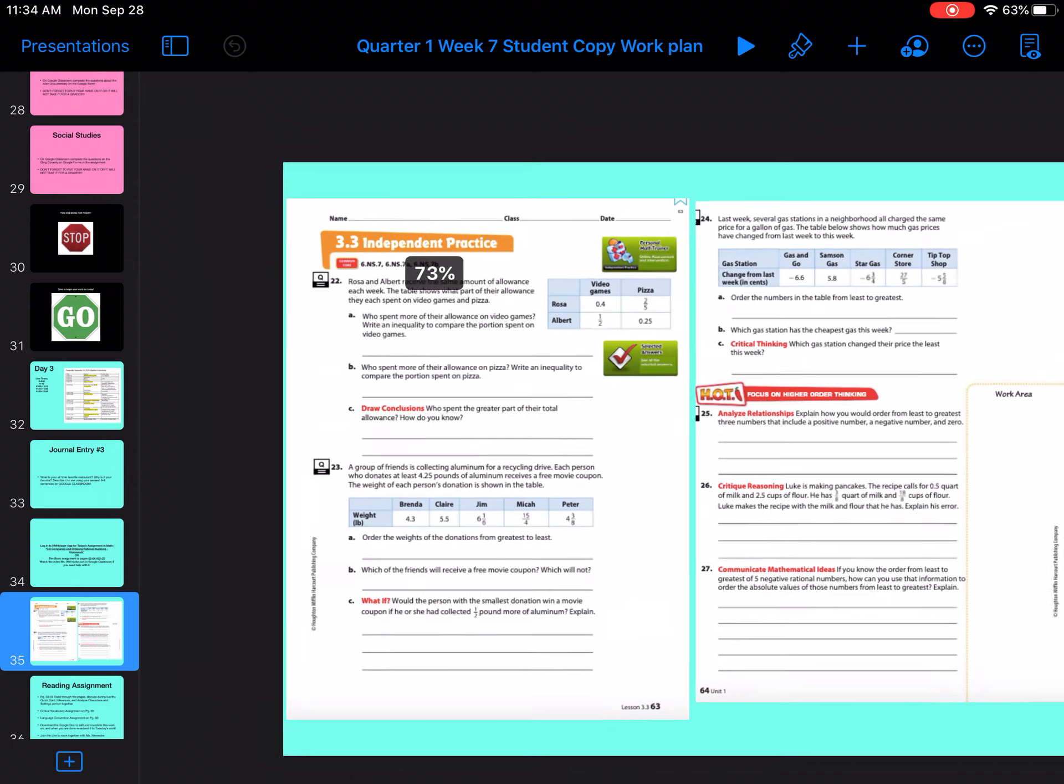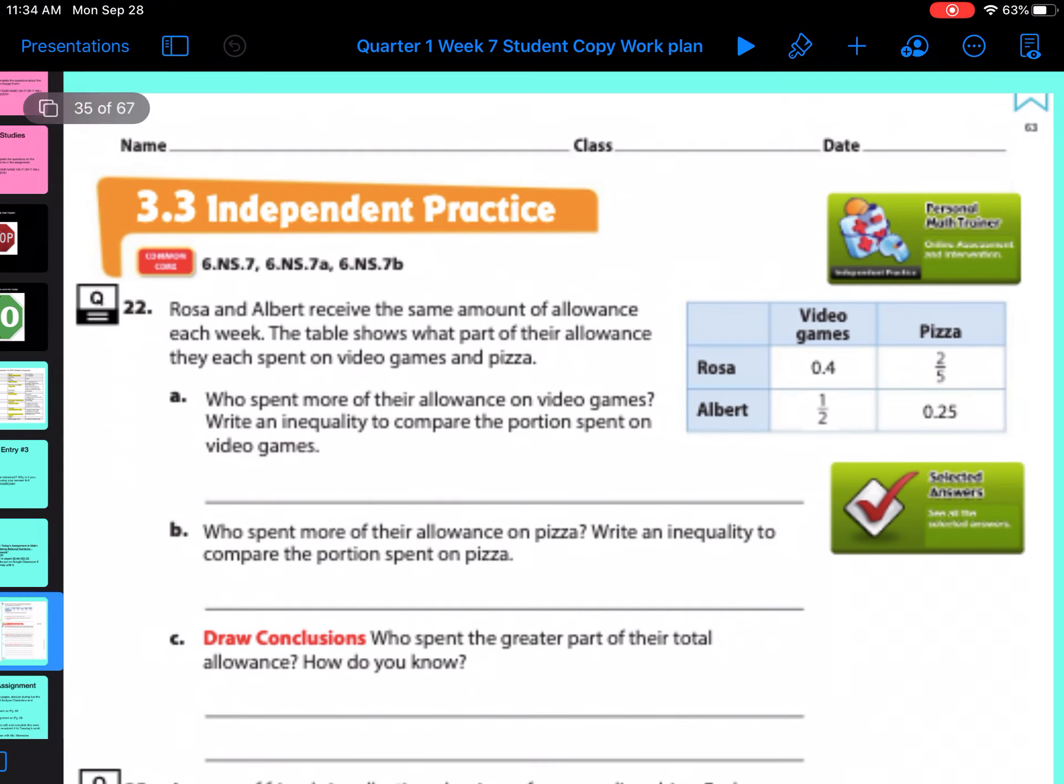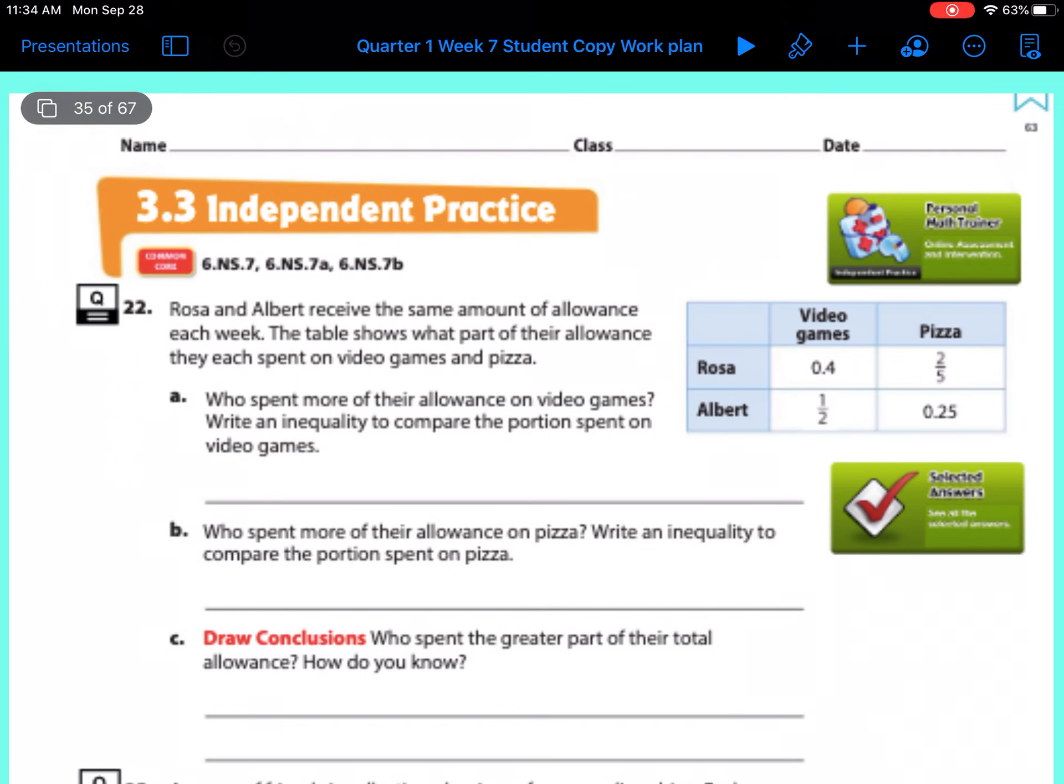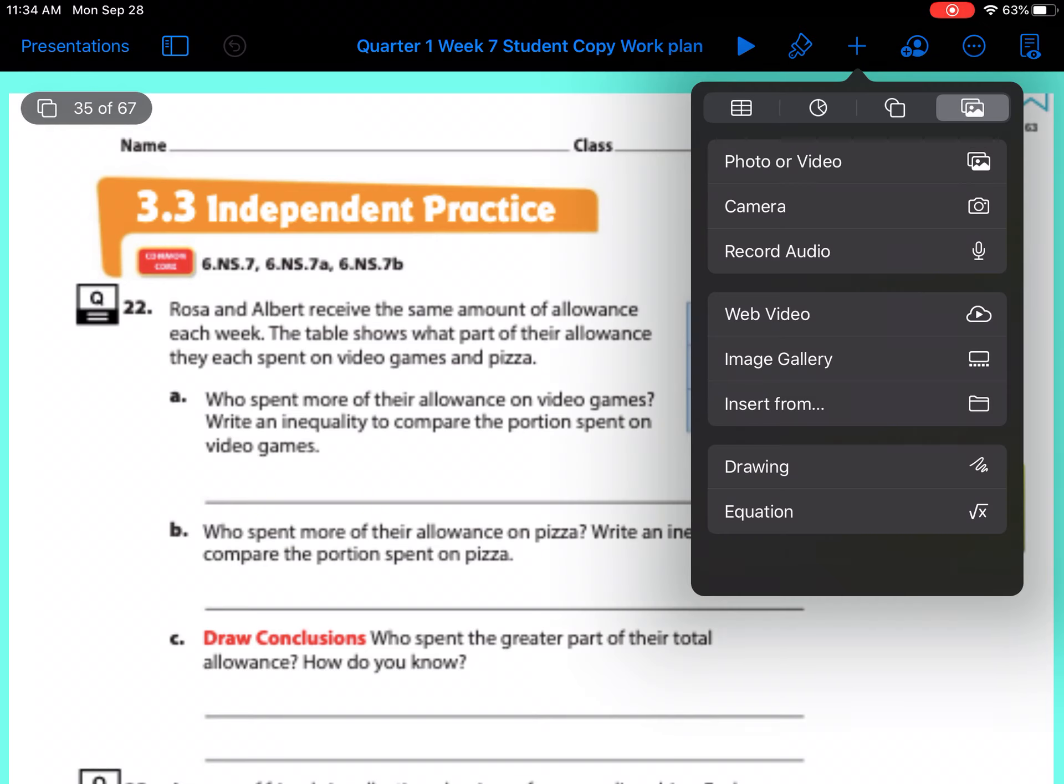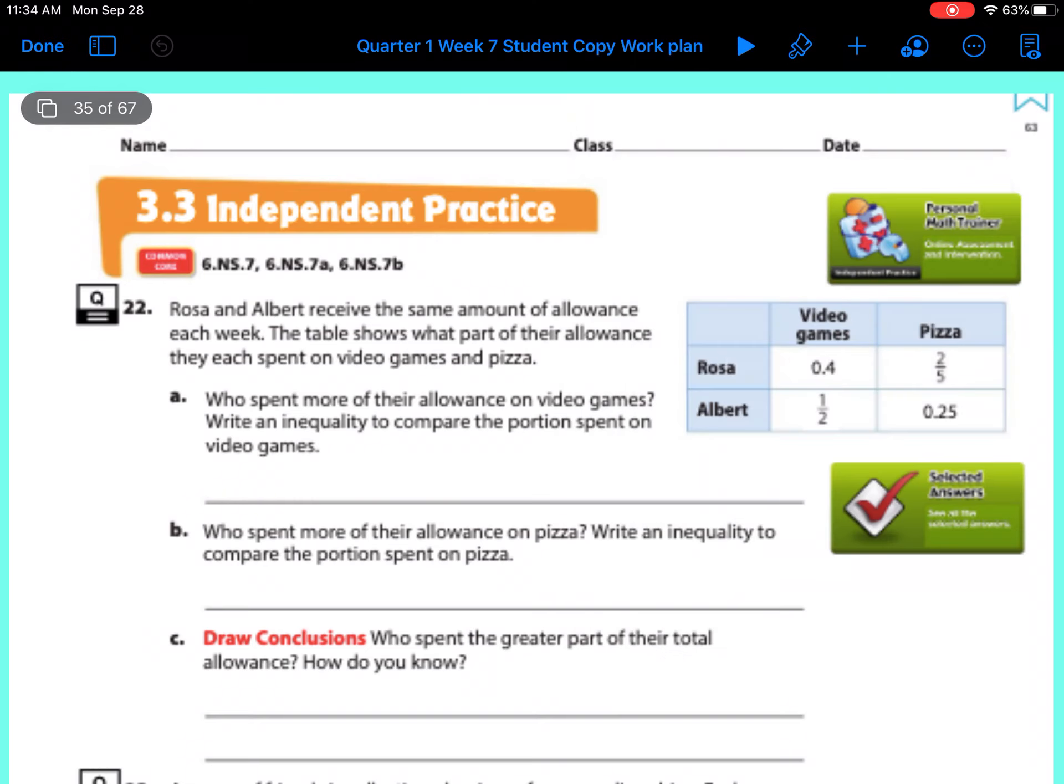So this is on your keynote. We're doing independent practice today. Rosa and Albert received the same amount of allowance each week. The table shows what part of their allowance they each spent on video games and pizza. Who spent more of their allowance on video games? Write an inequality to compare the portion spent on video games.